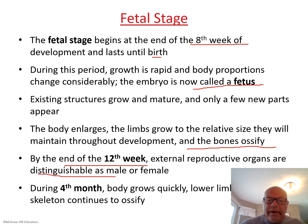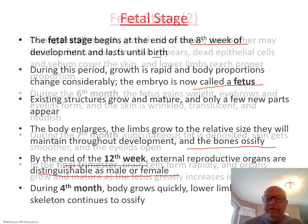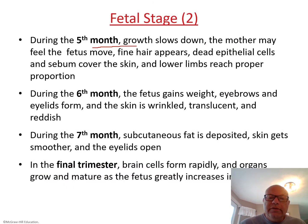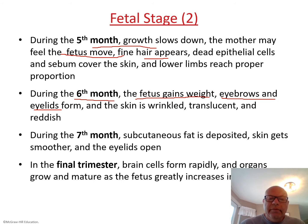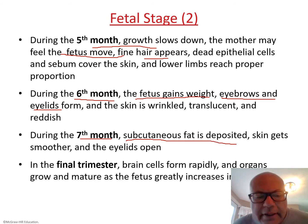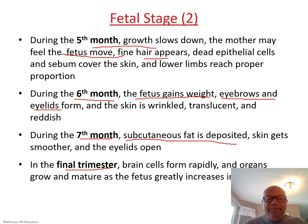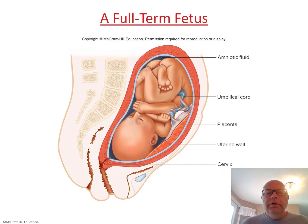By the eighth to twelfth week, we can determine whether it is male or female as the external reproductive organs are distinguishable. During the fourth month there is significant limb and skeletal development. In the fifth month there is some slowdown, movement may be felt by the mother, and hair starts to develop. During the sixth month the fetus gains weight and eyebrows and eyelids are forming. In the seventh month, subcutaneous fat is deposited, skin gets smoother, and eyelids will even open.